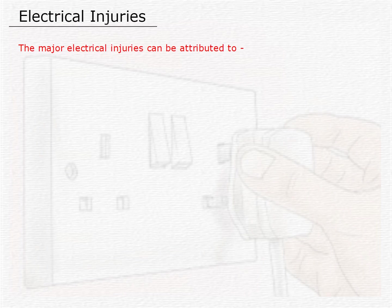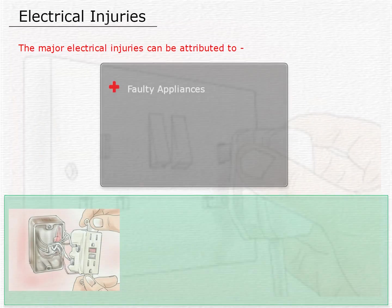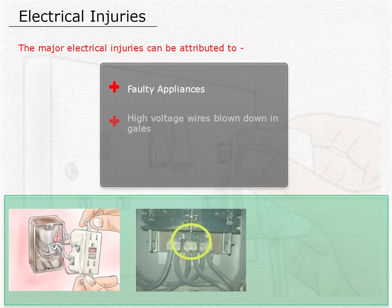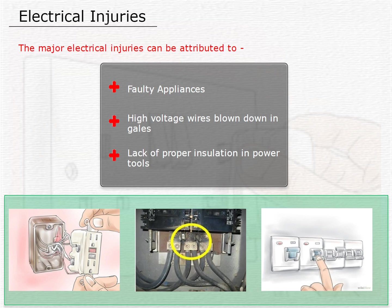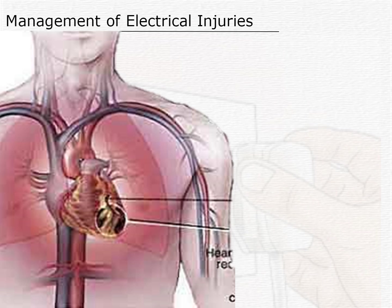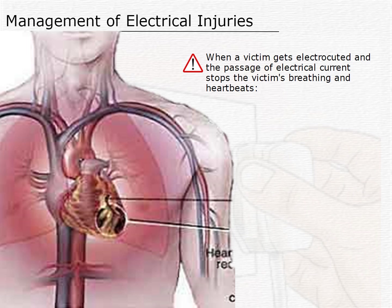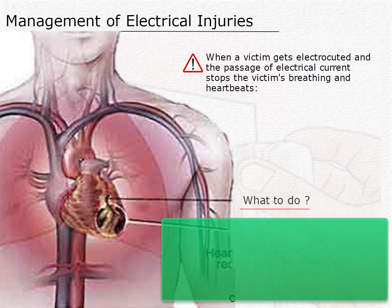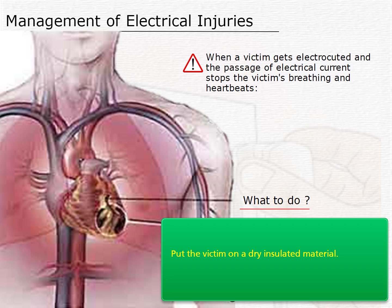The major electrical injuries can be attributed to the use of faulty appliances, high voltage wires blown down in gales, and lack of proper insulation in power tools and many more. When a victim gets electrocuted and the passage of electrical current stops the victim's breathing and heartbeats, in such cases, put the victim on dry insulated material.